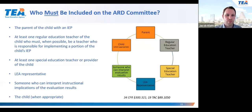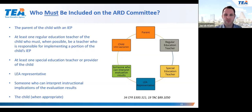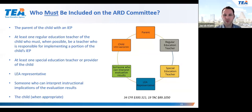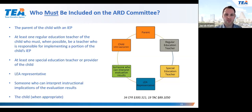There are several participants who must be included in the ARD committee when it convenes to serve as the accelerated learning committee under HB 4545. It must be a properly constituted ARD committee, including: the parent or guardian of the child with an IEP; at least one regular education teacher of the child, and when possible the teacher responsible for implementing a portion of the IEP; at least one special education teacher or provider; a representative of the local education agency; someone who can interpret the instructional implications of evaluation results; and the student where appropriate or where the student is of transition age.